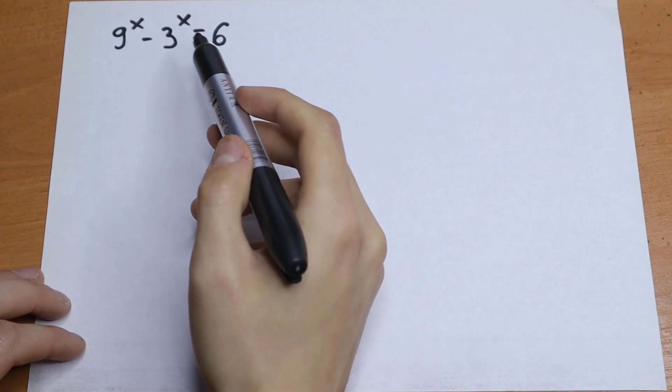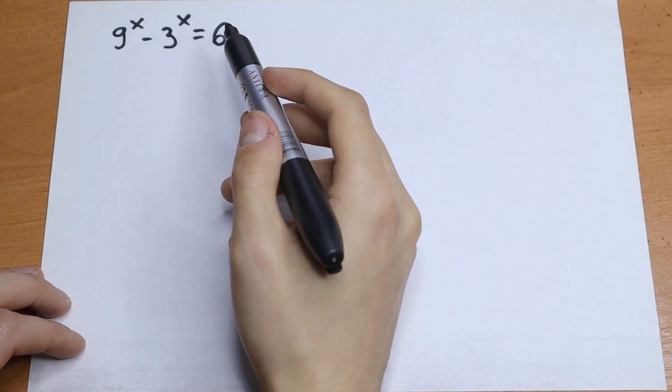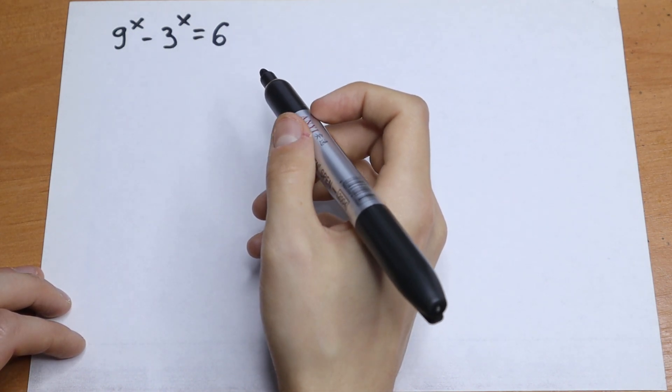9 to the power x minus 3 to the power x equals 6. If you know an answer, write your answer in the comments. Let's try to solve this.